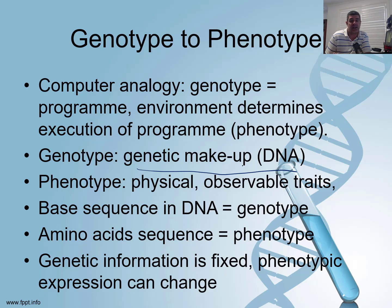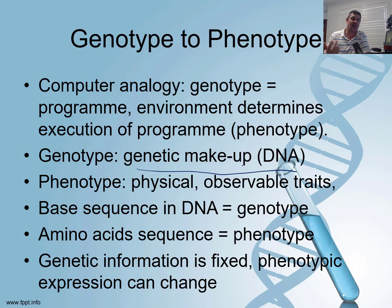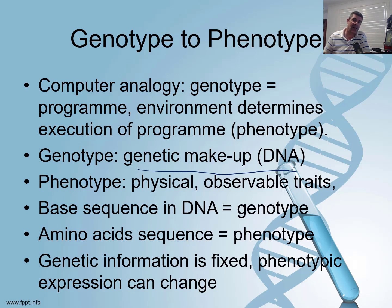If the base sequences in the DNA equal the genotype and the amino acid sequence in the ribosome is the phenotype, how can the environment actually change this? We know the genetic information is pretty much fixed. Mutation is one way the genetic information can change, and mistakes made during replication are not insignificant, but on the scale they don't usually make a lot of difference. What can happen, though, is that phenotypic expression can change on the basis of a number of different types of factors.